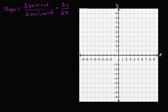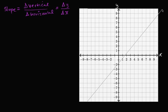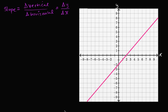I could draw something with a slope of one. A slope of one might look something like this — I could start it over here and use my line tool. As x increases by one, y increases by one, so a slope of one is going to look like this.